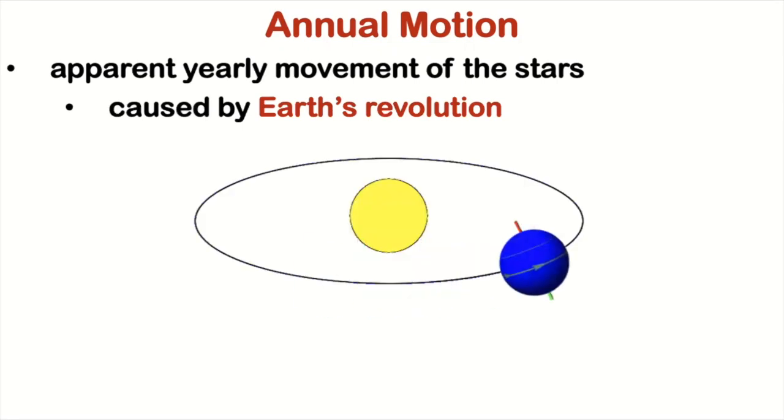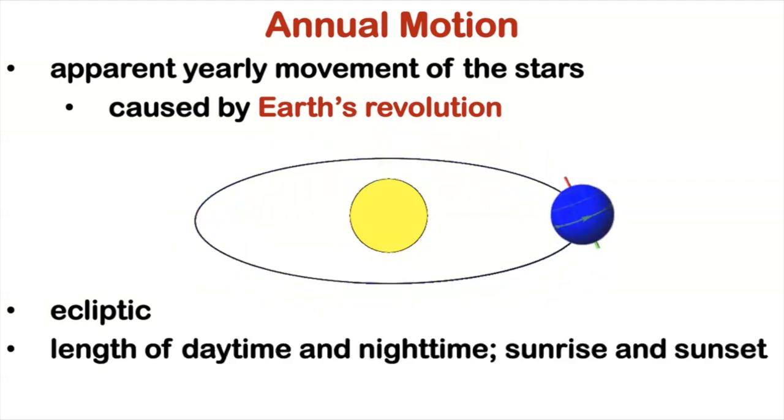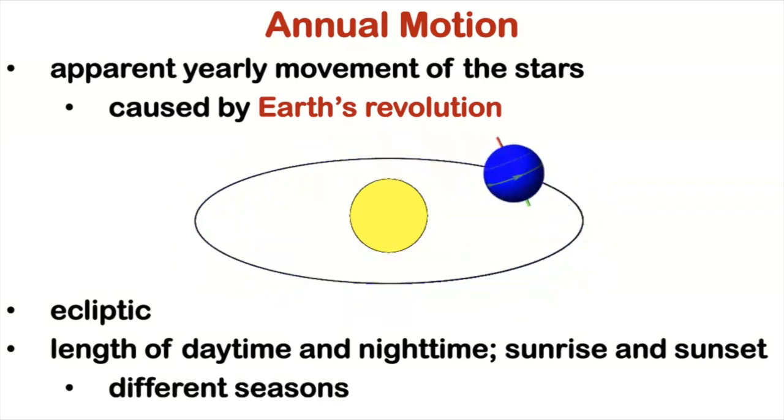So the Sun revolves around the celestial sphere with its path being called the ecliptic. As the Earth moves around the Sun, the apparent position of the Sun in the sky changes. This change results in the changes to the length of daytime and nighttime, as well as the changes to the sunrise and sunset points. So these changes are responsible for the different seasons we experience throughout the year, well, aside from climate change.